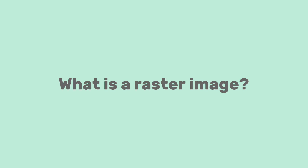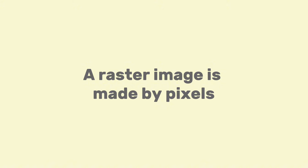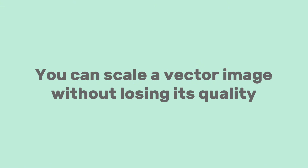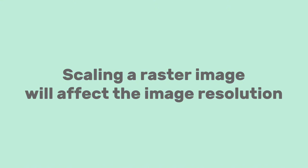A raster image is made by pixels. The biggest difference between a vector and a raster image is that when you scale a vector image you are not going to change the resolution. However, when you scale a raster image — for example if you zoom in or make it larger — you will see the pixelated part of the image.